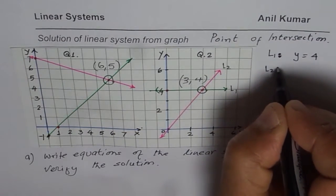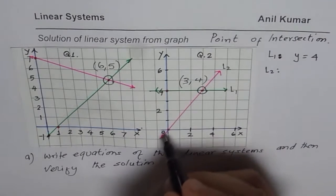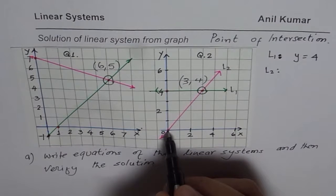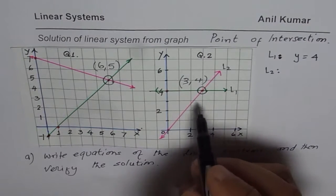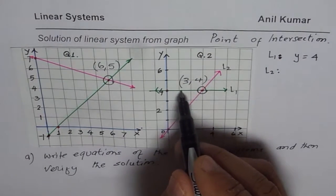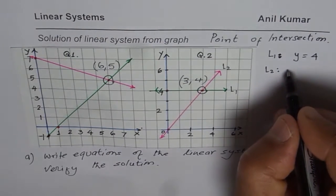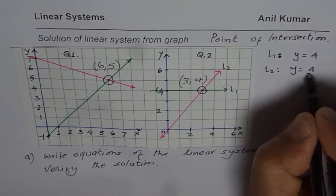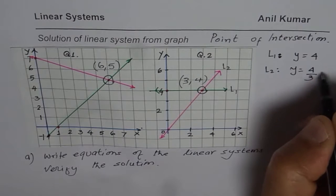Equation for the second line, it is a direct variation going through 0. Let's find what slope is. Since it goes through 0, y-intercept is 0. The slope of this line is 1, 2, 3, 4 rise, 1, 2, 3 run. So y equals 4 is the rise and 3 is the run. So 4 over 3x.